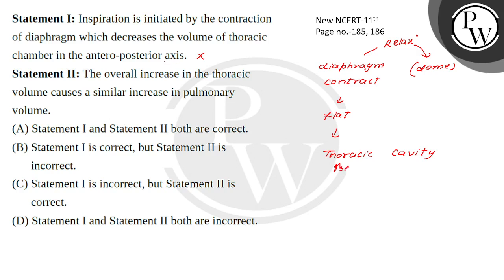When the external intercostal muscles contract, the ribcage and ribs move upward and outward. So the statement is incorrect — the volume does not decrease in the anteroposterior axis; it actually increases.